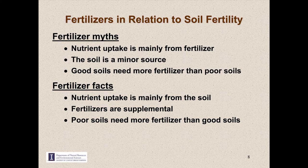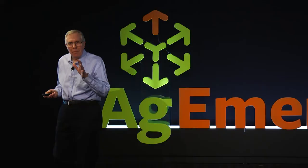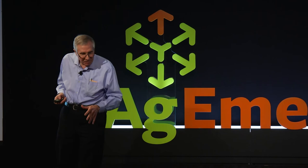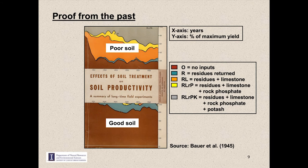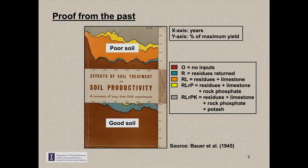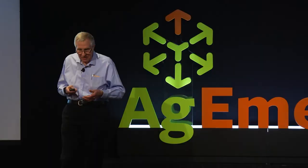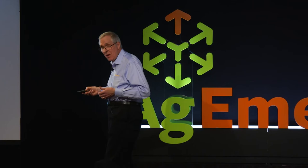You don't have to take my word for this. We have all the proof we need on the cover of an Illinois Experiment Station Bulletin published in 1945. The bulletin was reporting long-term yield trends as related to fertility treatment for a network of outlying Illinois experiment fields. On the cover, it contrasts a poor soil from southern Illinois with a good soil from northern Illinois. The colored panels show yield trends for different treatments over time, ranging from 1910 to 1945, and the y-axis is the percent of maximum yield for a mixed crop rotation that included corn, a small grain, and a forage legume.